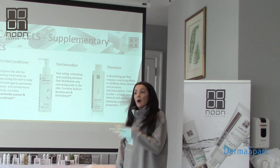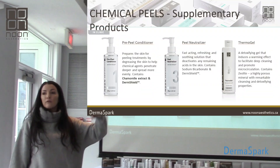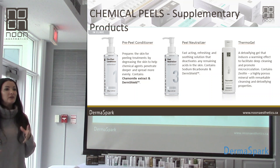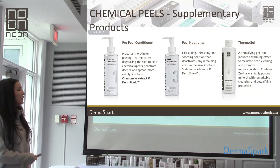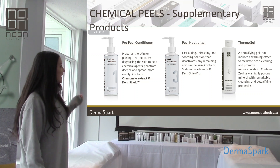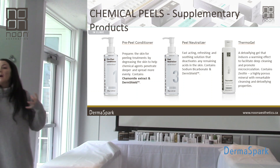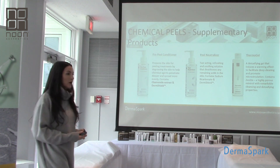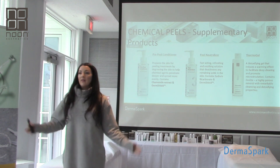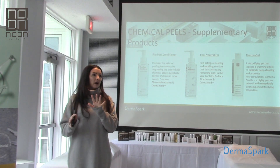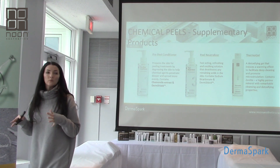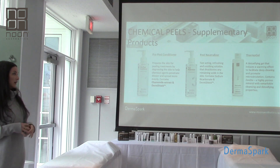Then we have our peel neutralizer. With both the P-peel and G-peel, we need to stop the peel from penetrating any further once we hit our minute mark. We stop it with a heavily alkaline solution — this is essentially sodium bicarbonate with DermShield in it. You're going to see it foam up during the demo; that's the chemical reaction of the acid meeting the alkalinity of the sodium bicarbonate. The patient often feels one more sting at this point. I always let them know they'll probably feel it again, then I rinse with nice cool water.